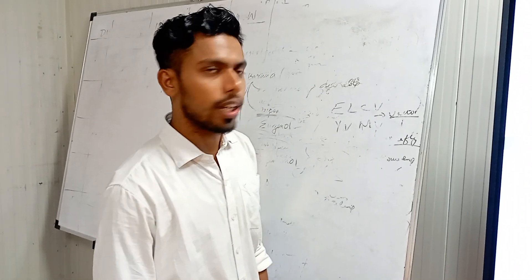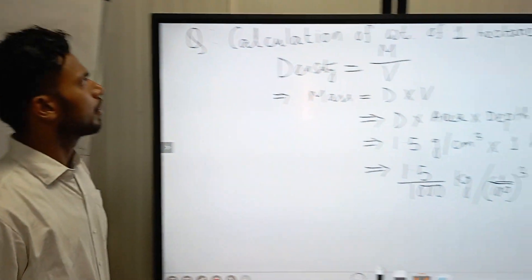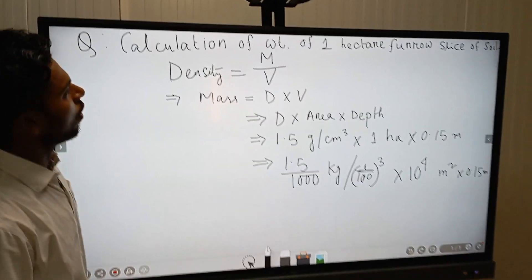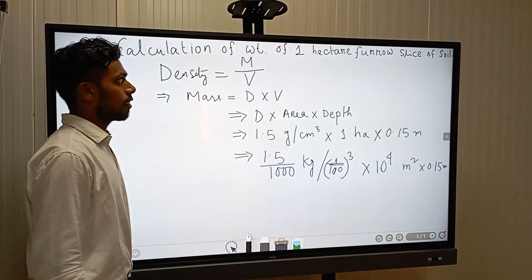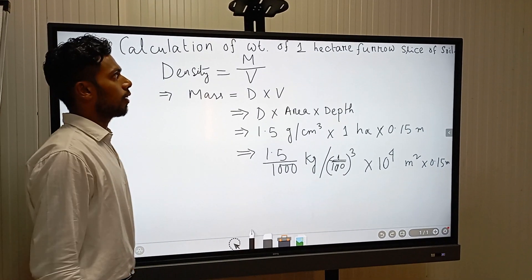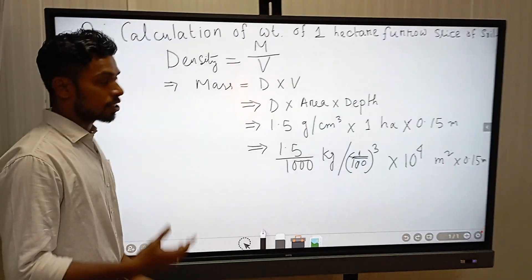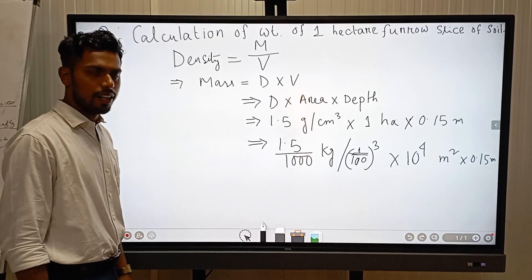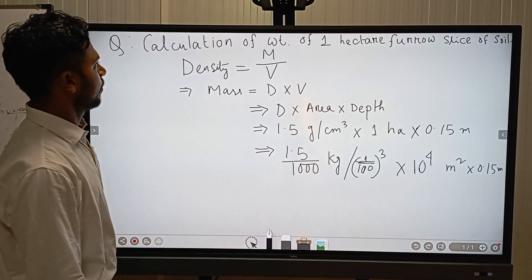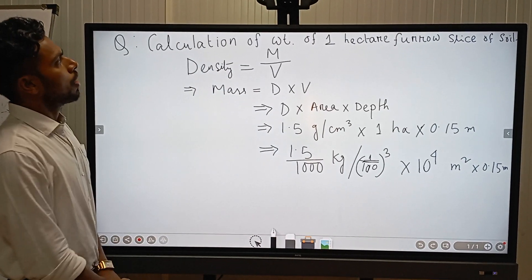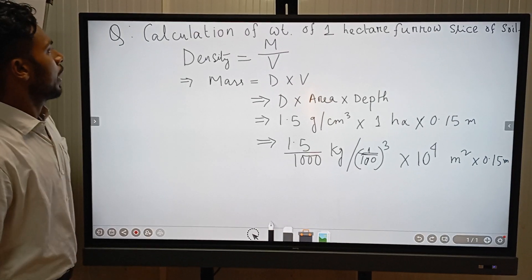Hello friends, welcome to my channel. Today I am going to discuss the calculation of weight of one hectare furrow slice of soil. As we know, one furrow slice means the soil from 0 to 15 cm depth. So we'll calculate the weight of one hectare of furrow slice of soil.